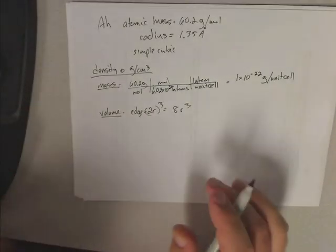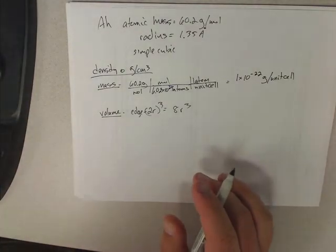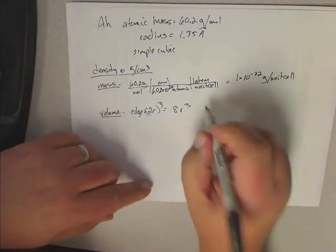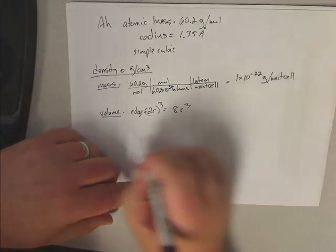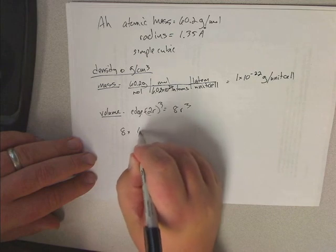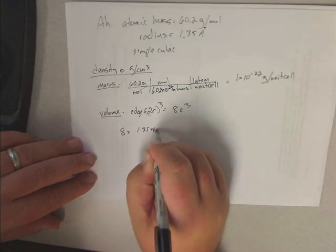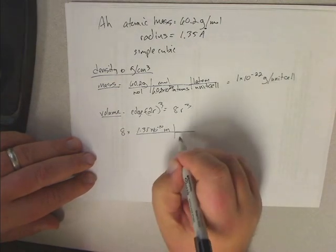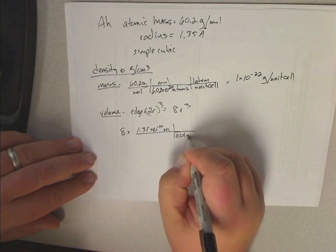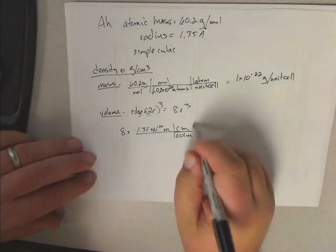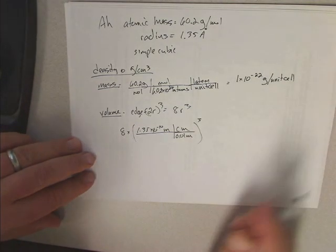So now, probably the smart thing to do here is to convert this to cubic centimeters. So 1.35 angstroms. We've got 8 times 1.35 times 10 to the minus 10th meters. That's what an angstrom is. And we know that there's 0.01 meters in a centimeter. So you end up getting 1.35 times 10 to the minus 8th. So you cube that.